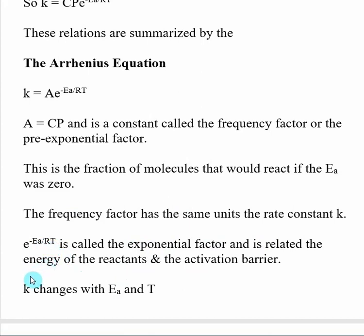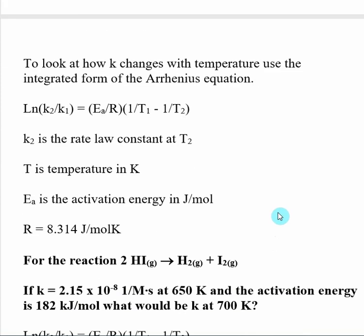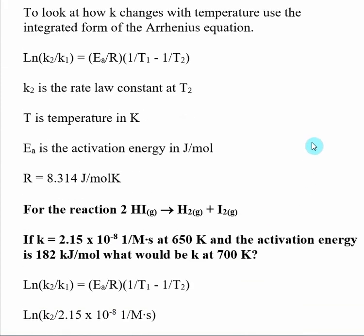Really, what the Arrhenius equation is going to show is that K changes with changes in the energy of activation and changes in temperature. I think we've all heard of the idea that reactions speed up when you heat them up. And that idea is shown in the Arrhenius equation by an effect on K. As our temperature increases, we are going to expect a corresponding increase in K. That's what's causing the reaction to speed up. And that's what the Arrhenius equation is going to use.